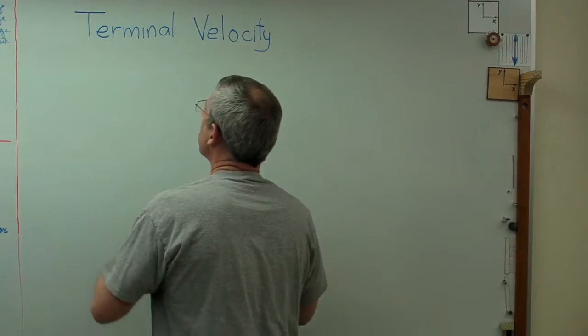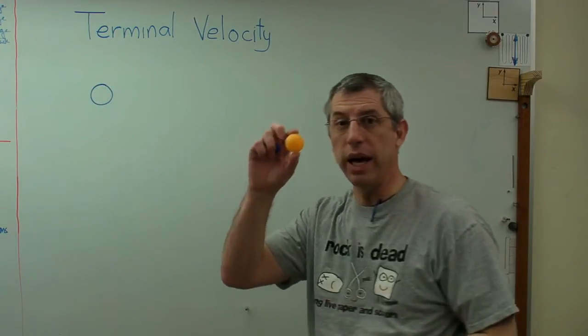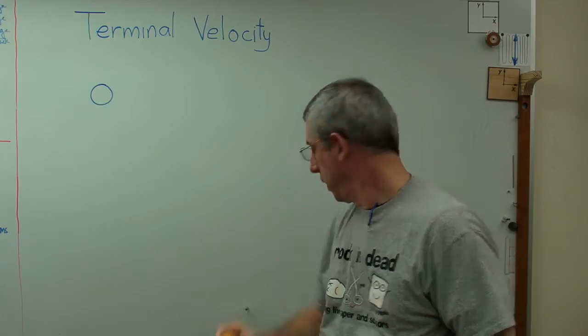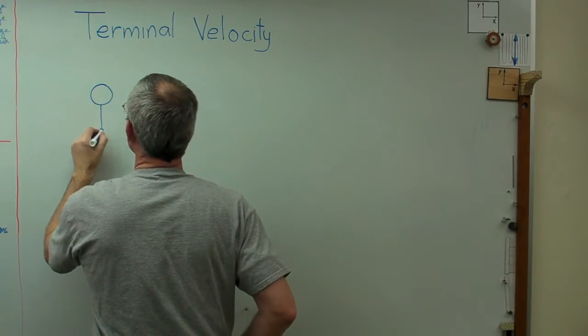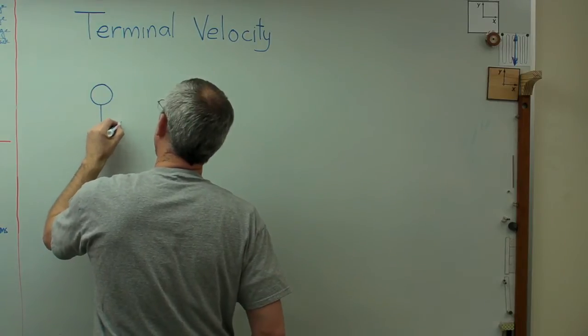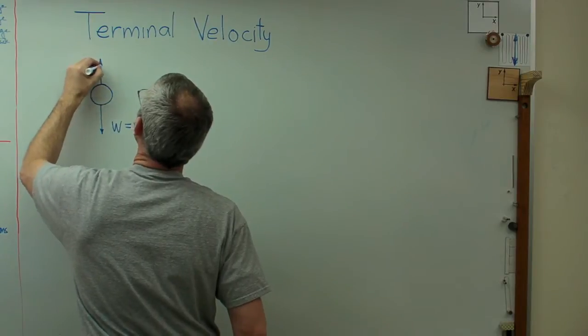So I want to do a quick example here. Let's say I've got a ping pong ball. I'm using a ping pong ball because it's really light and terminal velocity is low. Let's say I've got a ping pong ball and let's look at the forces acting on it. Well, this is the weight. And that equals mg. And then there's aerodynamic force.